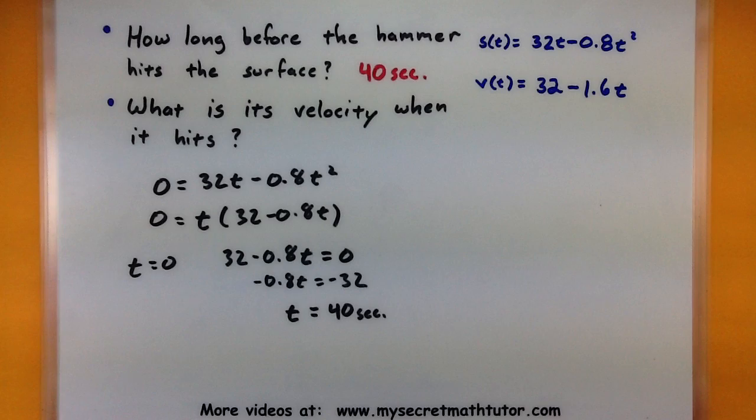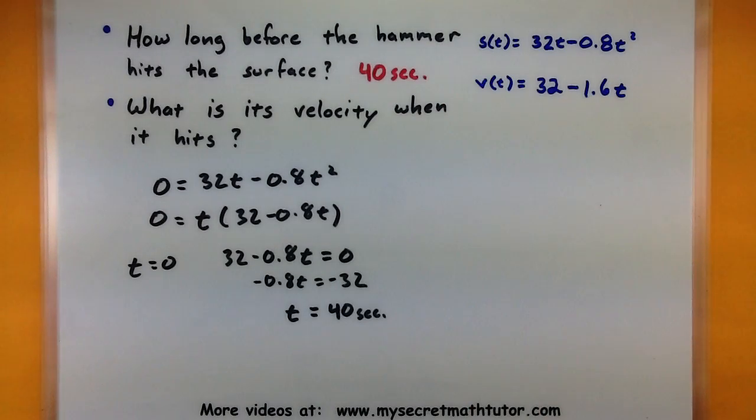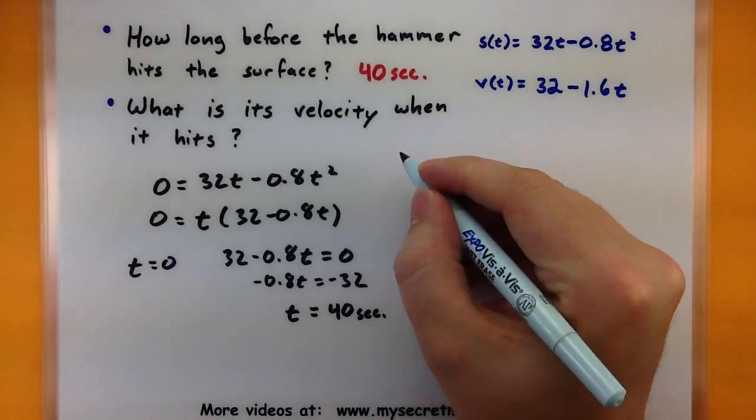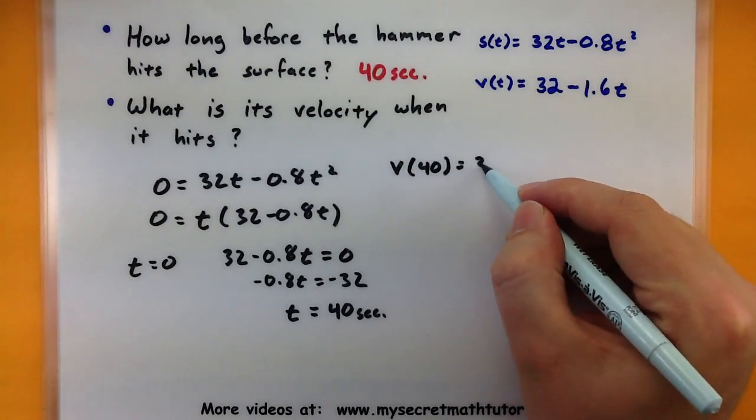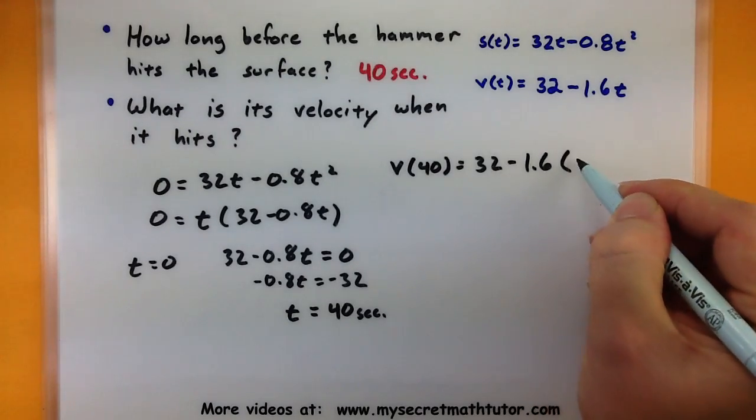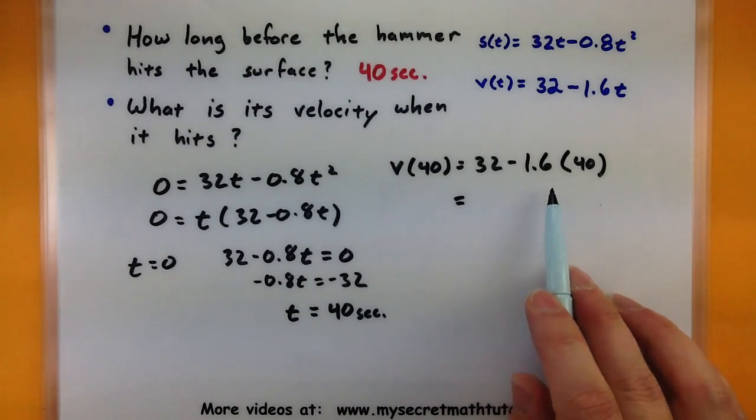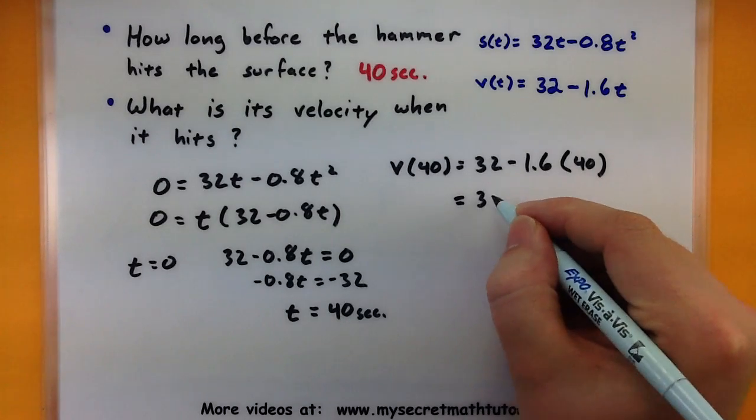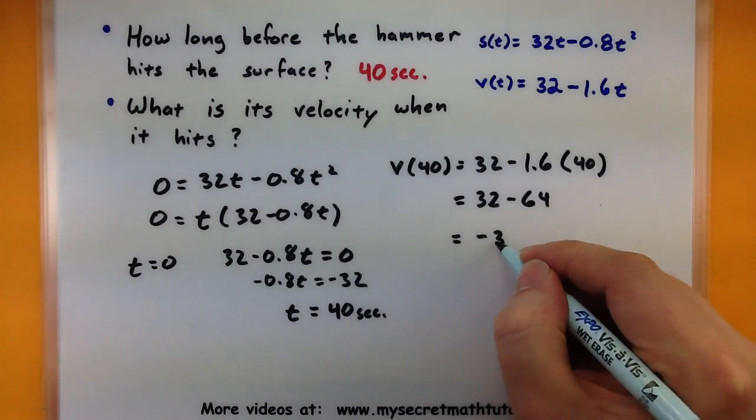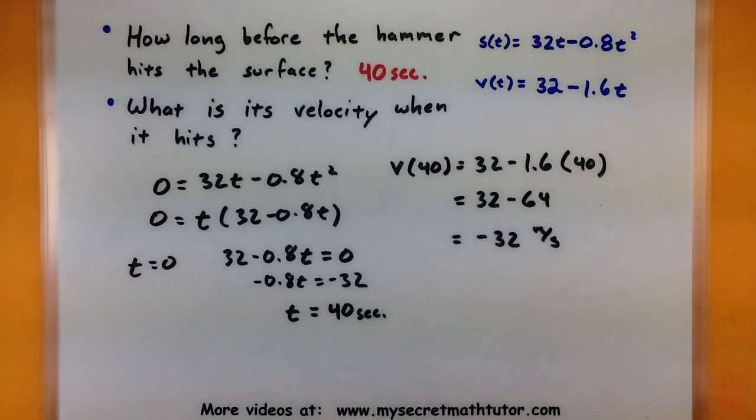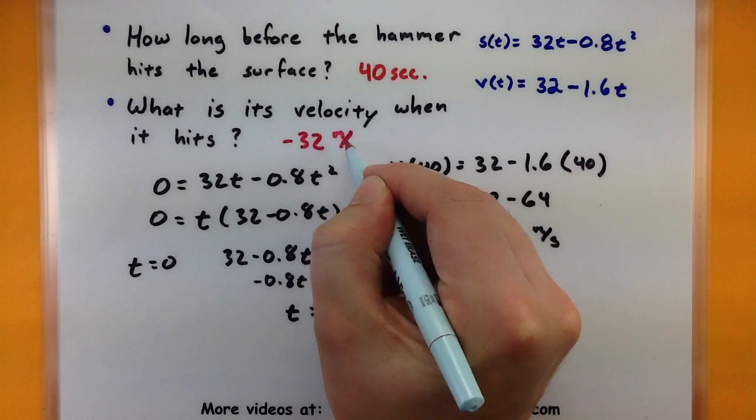40 seconds. Now to figure out what the velocity is when it actually hits, that's looking at our velocity function at 40 seconds, so we'll want to plug that value in there. So velocity after 40 seconds, this is 32 minus 1.6 times 40. A little bit of work, not too bad. 1.6 times 40 would be a 64, so 32 minus 64. I can see that it's going negative 32 meters per second. So what is its velocity: negative 32 meters per second.